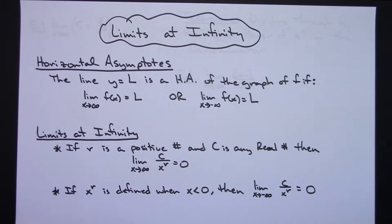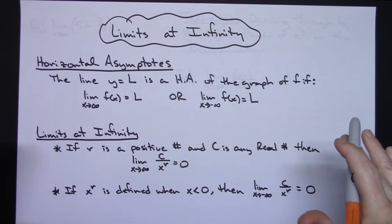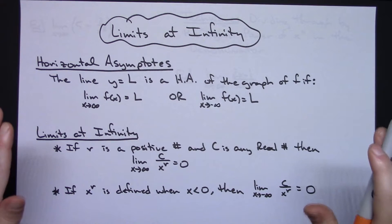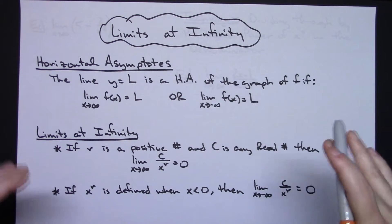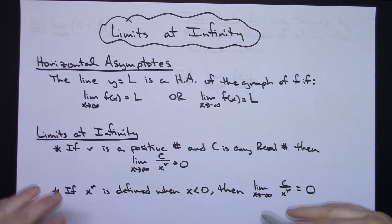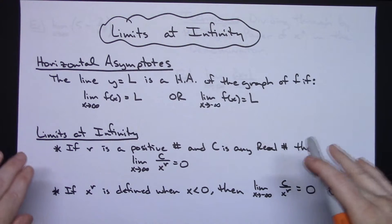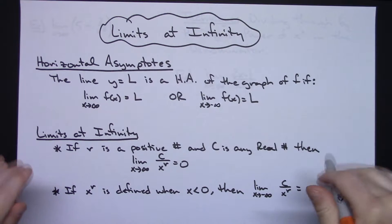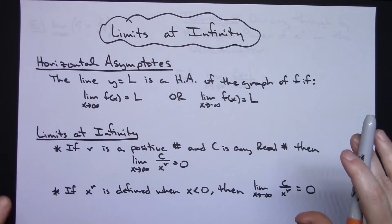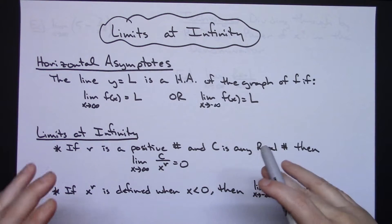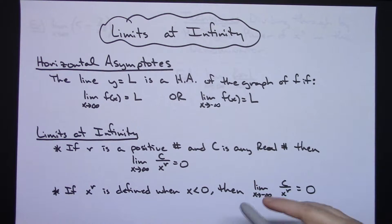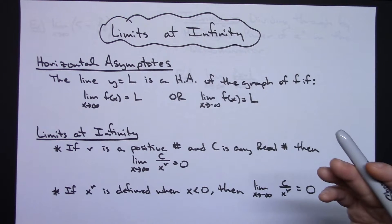In this video I'm going to take a look at some limits at infinity. We're going to talk about a definition for horizontal asymptotes and then we're going to deal with some rules for limits at infinity. Then I'm going to go through two examples that implement this and show you how to work out a limit at infinity.